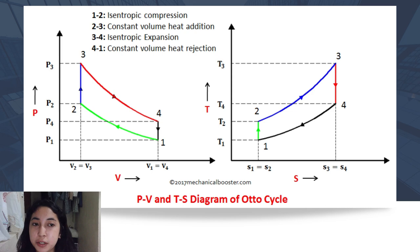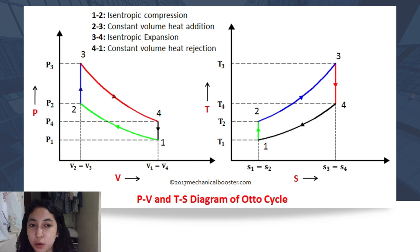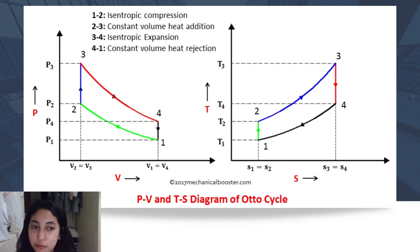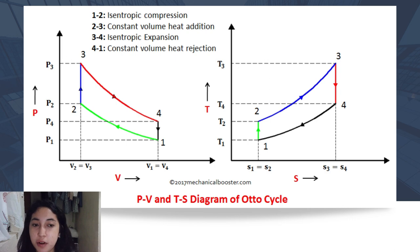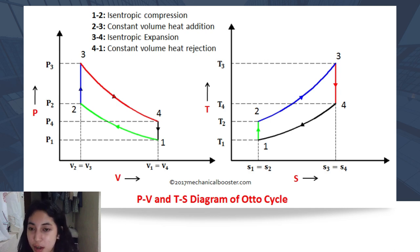This is the pressure-volume and temperature-entropy diagram of the Otto cycle. As seen in both diagrams, step 1 to step 2 is an isentropic compression; 2 to 3 is isometric, which is the constant volume heat addition; 3 to 4 is an isentropic expansion; and 4 to 1 is isometric, which is the constant volume heat rejection. In both diagrams, heat is introduced at step 2 to 3 and is rejected at step 4 to 1.